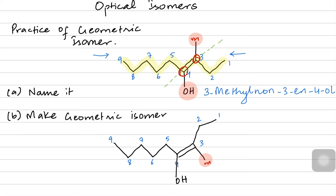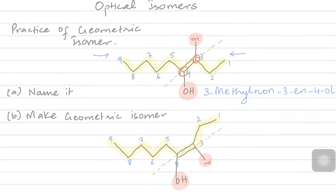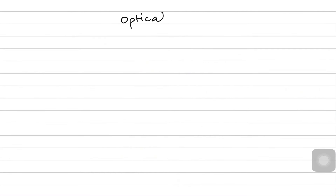You can see on carbon 3 the methyl is now coming at the bottom instead of the top, while carbons one and two are now at the top. For carbon 4, everything is exactly the same. That is how we draw geometrical isomers. I hope geometrical isomers are clear and we are ready for talking about optical isomers.